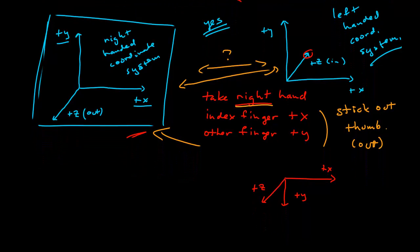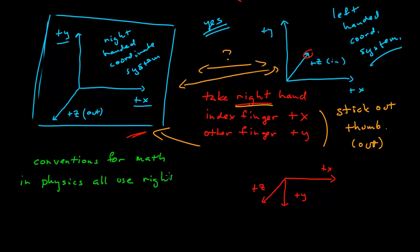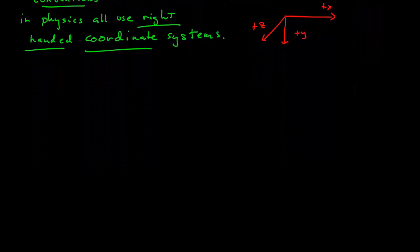So the first step is how do you define a right-handed coordinate system. Second step is why they are different and you can't rotate one into the other. And then the final fact you need to know is that our conventions for math in physics all use right-handed coordinate systems.